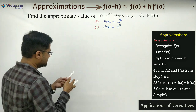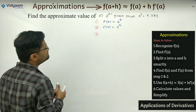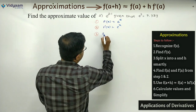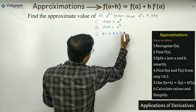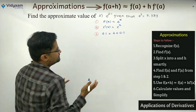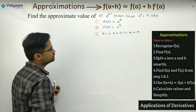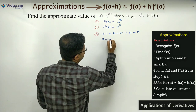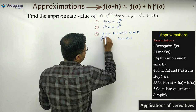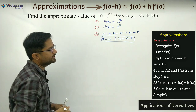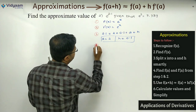So f'(x) = e^x. Next step: split 2.1 as 2 + 0.1 smartly. Comparing with a + h, we get a = 2 and h = 0.1. Once a and h are found, in step 4 we write f(a) = e^a and f'(a) = e^a as well.